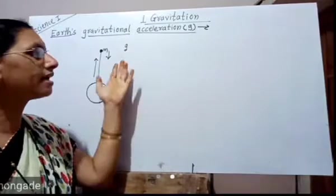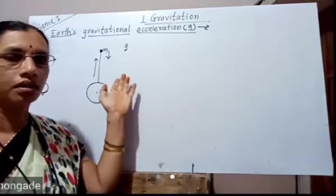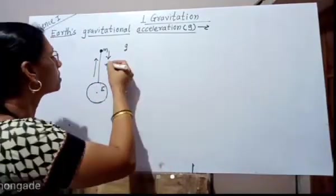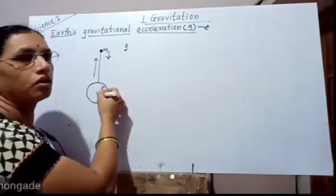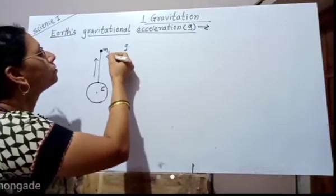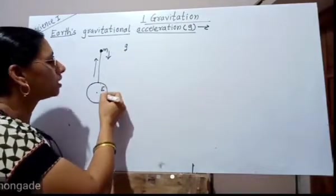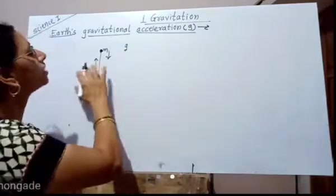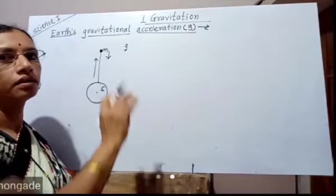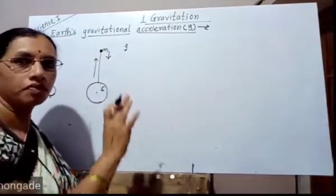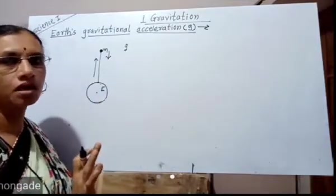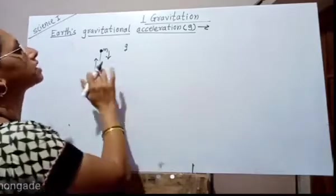Gravitational acceleration is a vector quantity, because it has direction. The gravitational pull is towards the center of the earth, and therefore the object falls in the vertically downward direction. Since it has direction, it is a vector quantity.